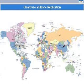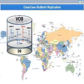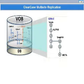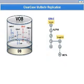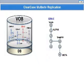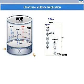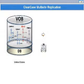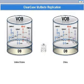Let's focus first on the contents of the VOB in the United States. With ClearCase Multisite, all elements are stored in the VOB along with the element's branches, versions on those branches, labels on those versions, and all other element metadata. All of this is stored in the VOB's database. The complete VOB database is packaged into a multisite packet that is sent to the destination location, where it is received and processed, creating the replica VOB.